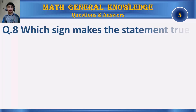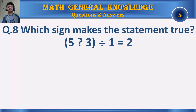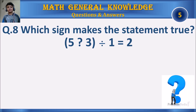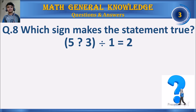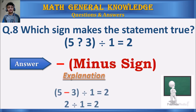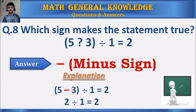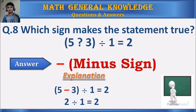Question 8: Which sign makes the statement true? Your time starts. The answer is the minus sign. 5 minus 3 equals 2, and 2 divided by 1 equals 2.